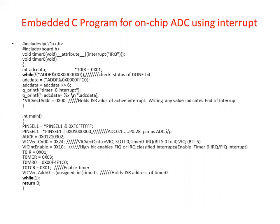We can see the embedded C program for on-chip ADC using interrupts, for interfacing ADC with LPC-2148. First, we include the LPC2148 header file and the board header files. A while loop is used. The interrupt attribute IRQ is applied. Inside the interrupt ADC ISR, a while loop checks the status of the done bit, then reads the ADC data. It then holds the ISR address of the active interrupt, and writing any value signals the end of interrupt.